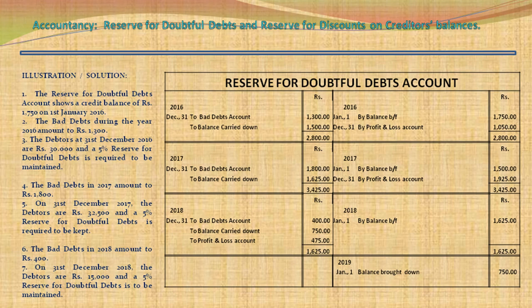Moving to 2018: balance brought down is Rs. 1,625. The bad debts in 2018 amount to Rs. 400, recorded as bad debts account Rs. 400. On 31 December 2018, the debtors are Rs. 15,000 and 5% reserve is to be maintained. 5% of Rs. 15,000 comes to Rs. 750. The credit balance of reserve is more than the debit balance, so the difference of Rs. 475 is transferred to Profit & Loss Account, and the balance carried down is Rs. 750.